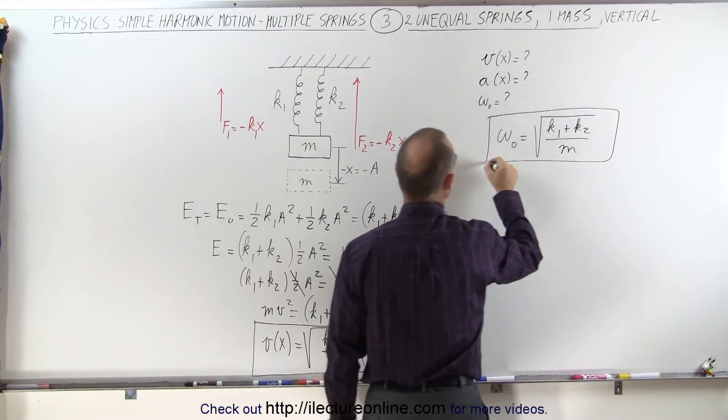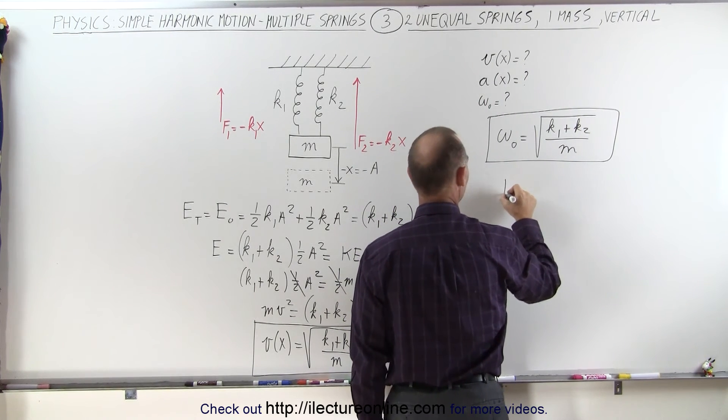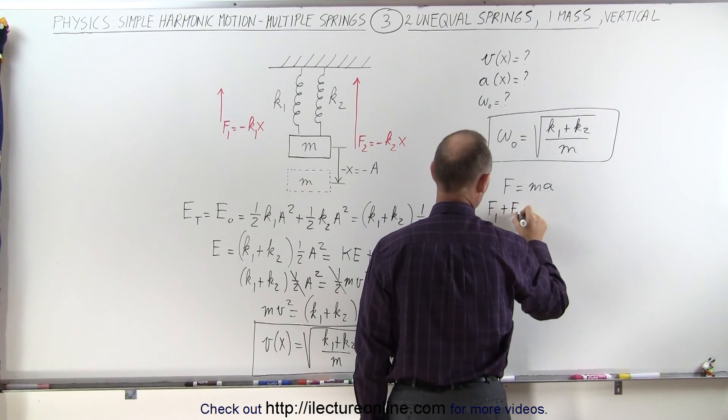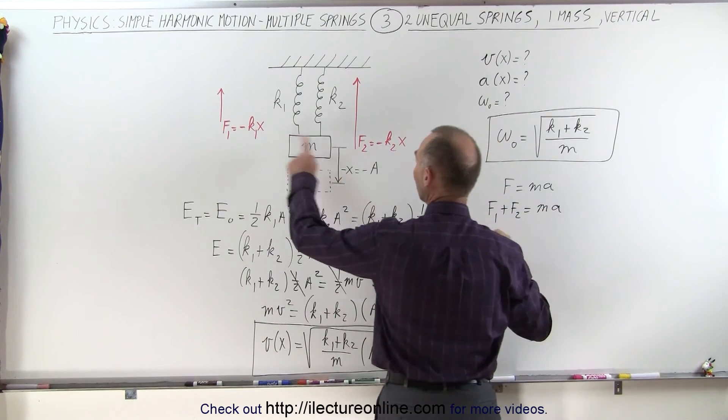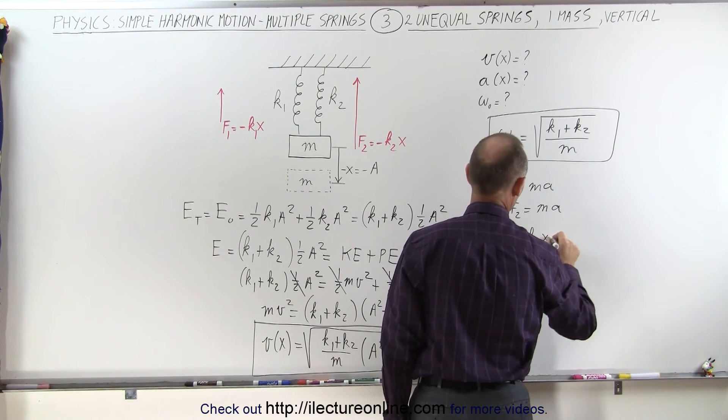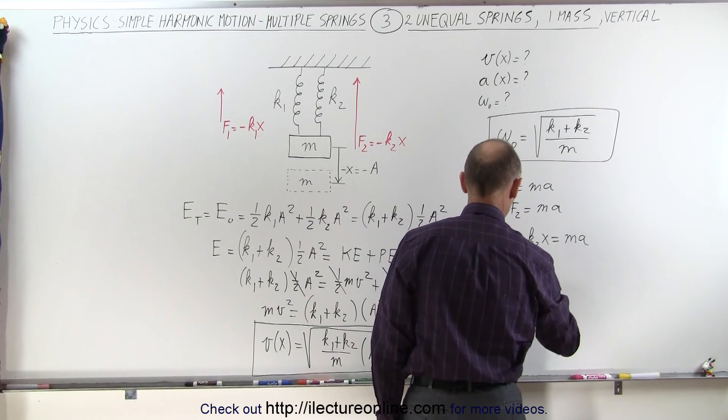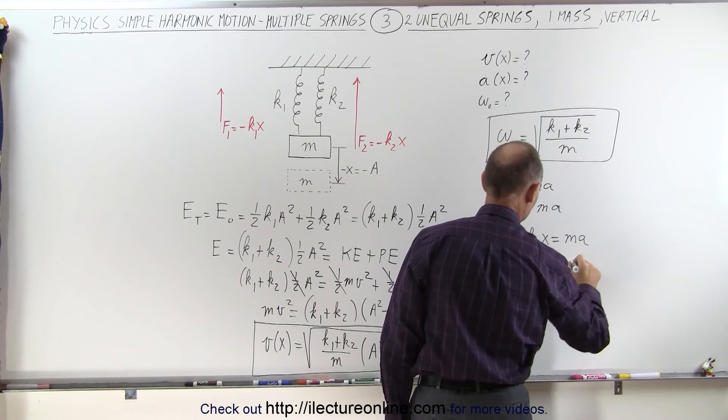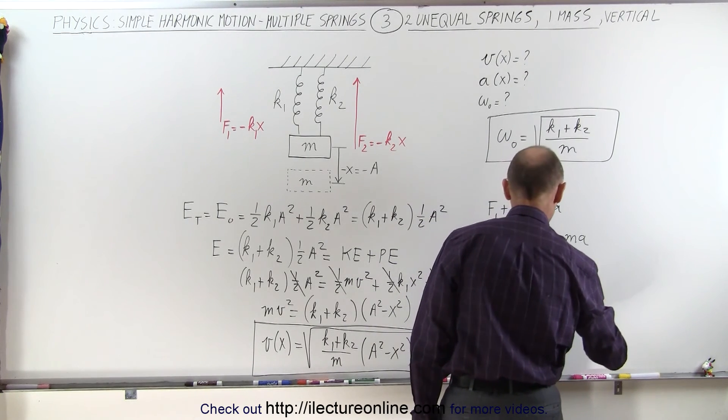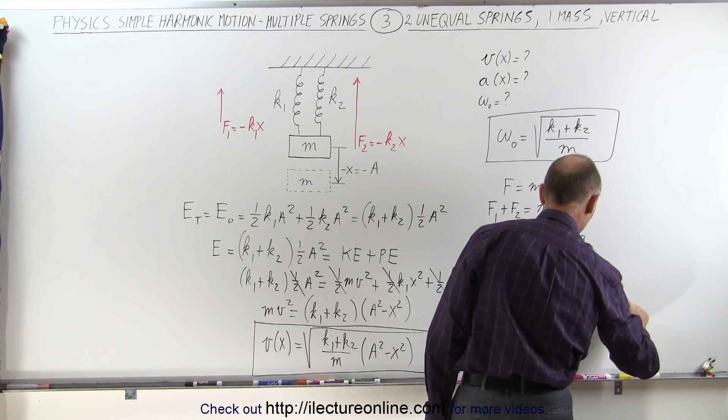And if we want to find the acceleration as a function of position, we can say that F equals ma, and in this case, of course, it will be the sum of the two forces, F1 plus F2 equals ma. When we add those two together, we get minus k1x minus k2x is equal to ma. We can factor out an x, write this as minus k1 plus k2 times x equals ma. And finally, a as a function of position x is equal to minus k1 plus k2 divided by the mass times x.